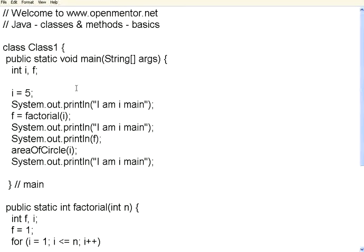What you will see is something different in Java. In C, you call them as procedures or functions. In Java, or in object-oriented language terms, these are all called methods. You don't call them as functions and procedures — you call them as methods.